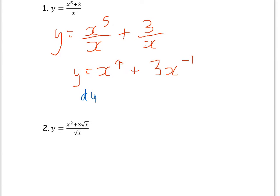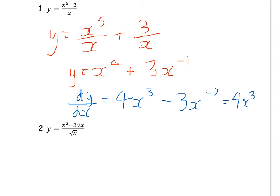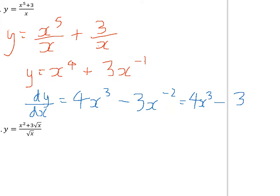Now differentiate: dy/dx gives four times x to the power of three. Then minus one times three becomes minus three x to the power of minus two, since minus one take away one is minus two. This isn't the final answer — we need to change the negative power back to a fraction, so x to the minus two becomes one over x squared.